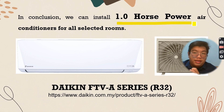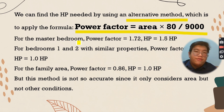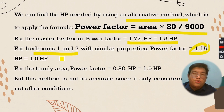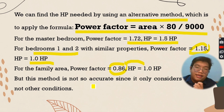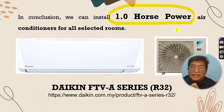We can also determine the horsepower using an alternative method where the power factor equals area times 80 divided by 9,000. For the master bedroom, the power factor is 1.72, adjusted to the nearest 1.5 horsepower. For bedroom 1 and 2, the power factor is 1.15, near to 1 horsepower. For the family area, the power factor is 0.86, so the nearest is 1 horsepower. However, this method is not very accurate as it only considers area. So we apply 1 horsepower for all selected rooms.